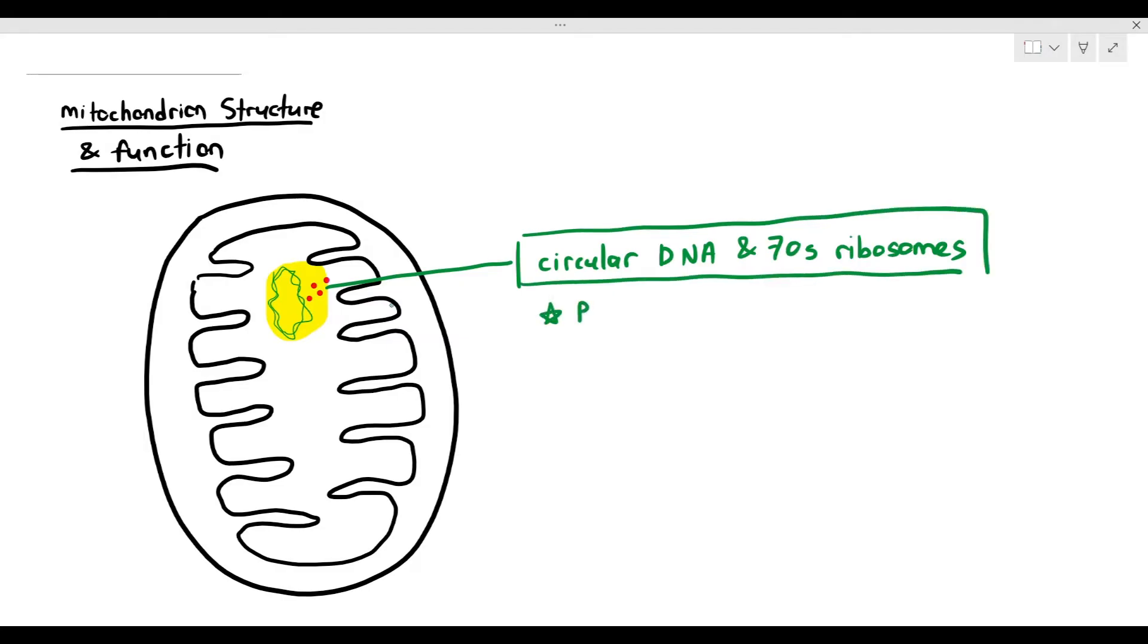So let's focus on the circular DNA and 70S ribosomes. Because it has its own circular DNA and 70S ribosomes, they can work together to carry out protein synthesis. The circular DNA will undergo transcription to produce mRNA, and the mRNA will move towards the 70S ribosomes and undergo translation to produce proteins. They will usually synthesize enzymes needed in respiration.